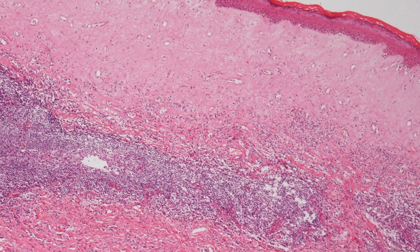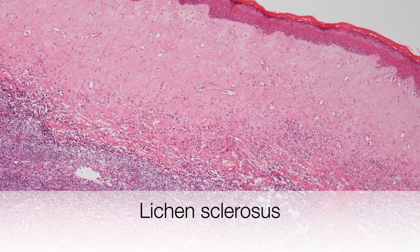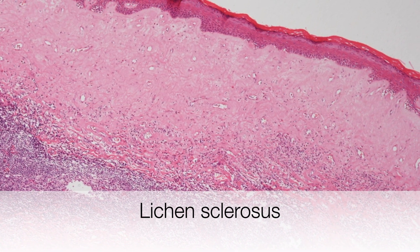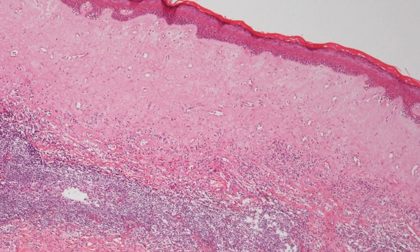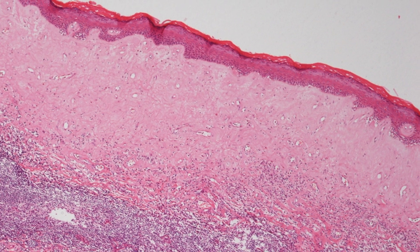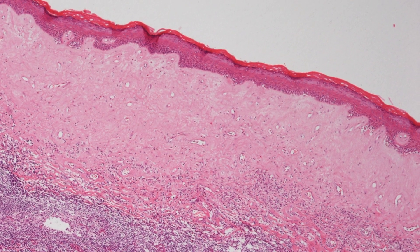Here is an example of lichen sclerosis. An older term for it is lichen sclerosis et atrophicus, because of the atrophy of the overlying epidermis.